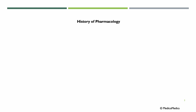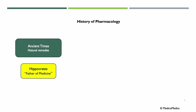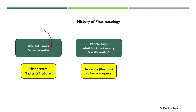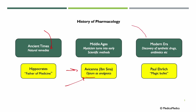Taking a brief look at the history of pharmacology: in ancient times, natural remedies like willow bark were used for pain relief. Moving into the Middle Ages, mysticism turned into early scientific methods, with figures like Avicenna and his experiments with opium. Finally, arriving at the modern era with discoveries of synthetic drugs and antibiotics like penicillin.